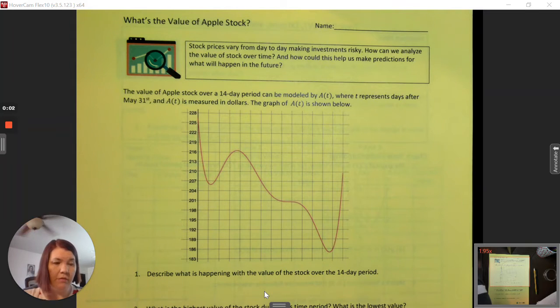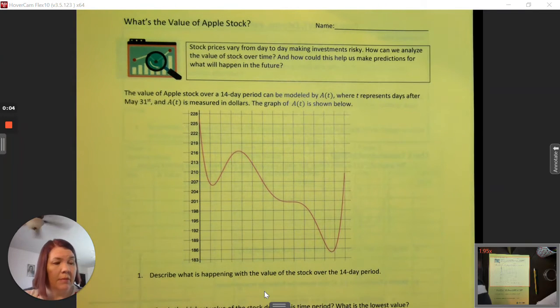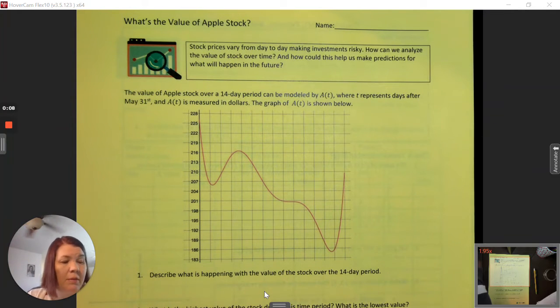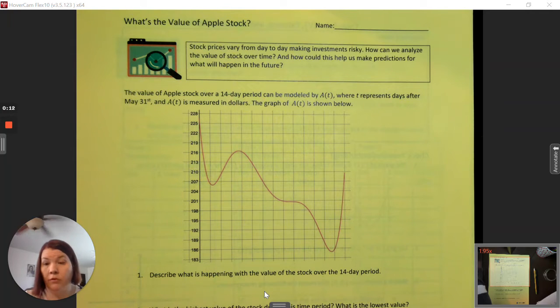Welcome back to the joy of video lessons. This is lesson topic 5.2 for calculus. We're talking about the value of Apple stock and we're going to try to figure out several new vocabulary words, the first of which is extrema and then also critical points.